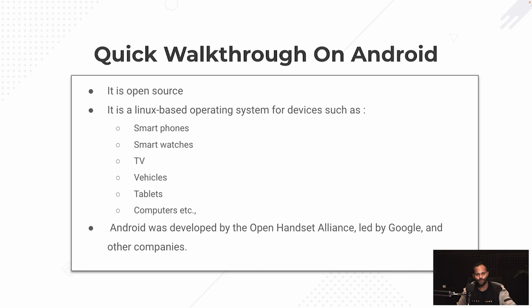A quick walkthrough on what Android is: we all know it's open source and Linux-based. The devices it mostly runs on are smartphones, watches, Android TVs, Android CarPlay which is used in vehicles, tablets, computers, and a lot more. There are also specs that come with Android OS, and so many different things are coming in.